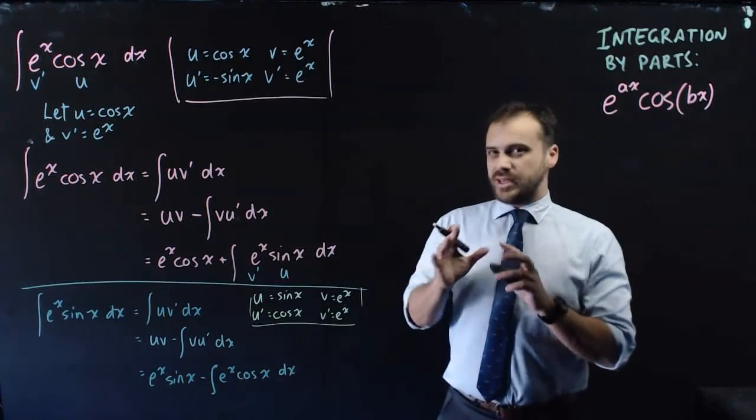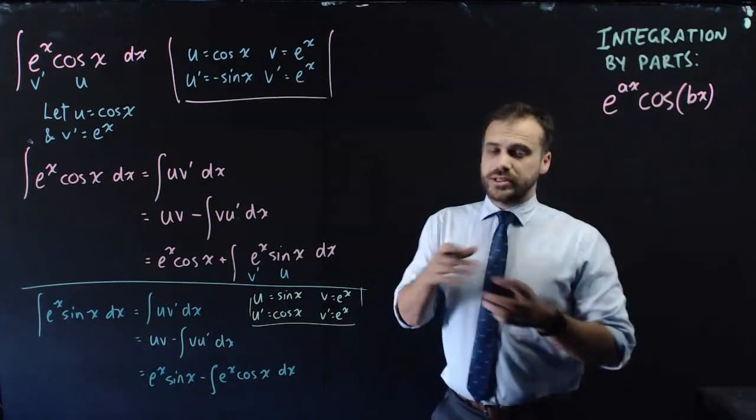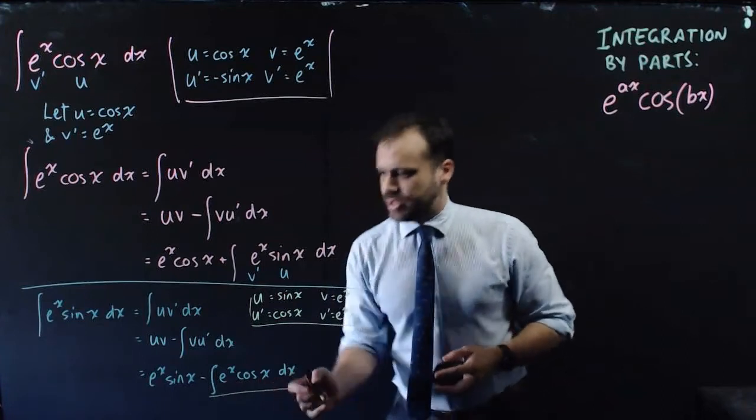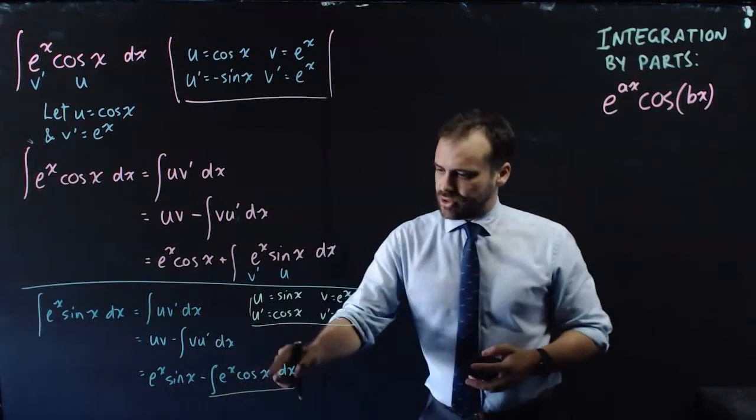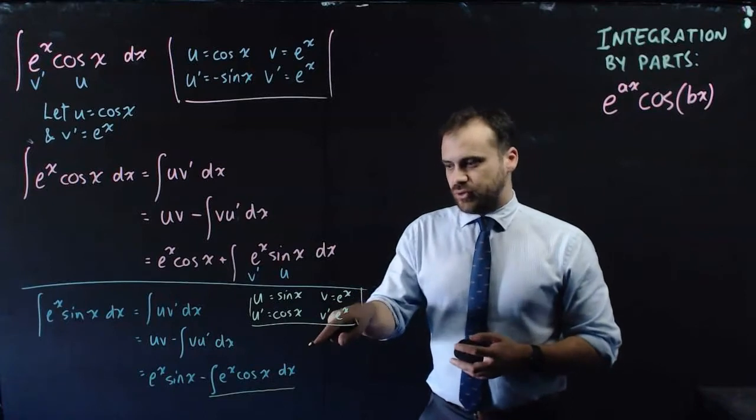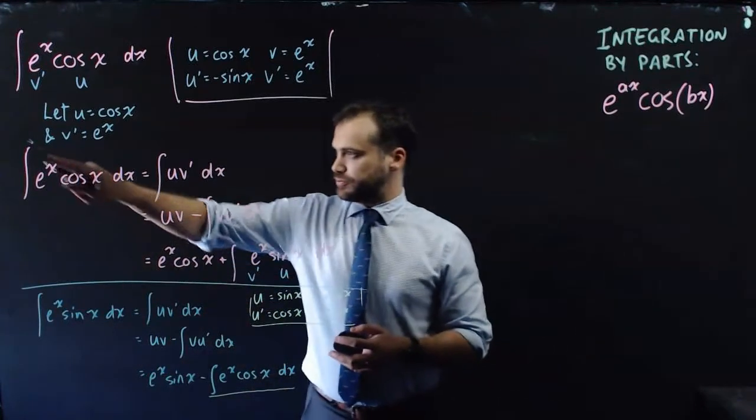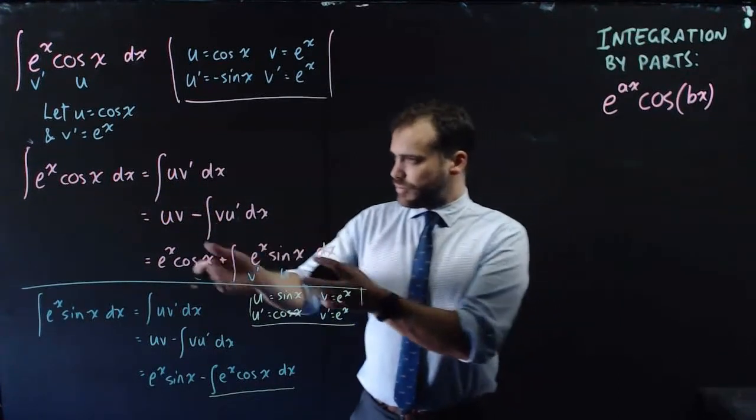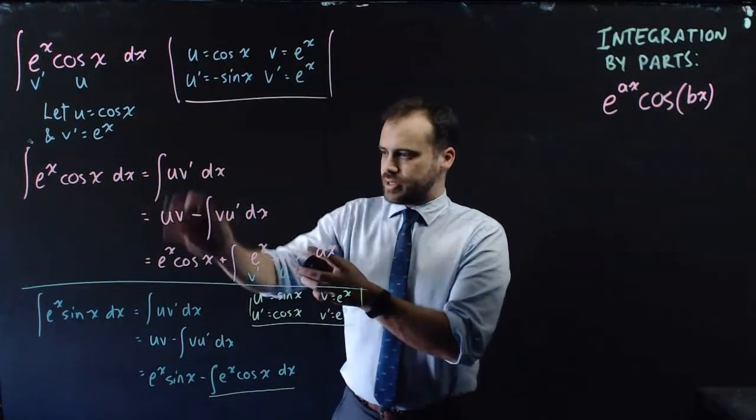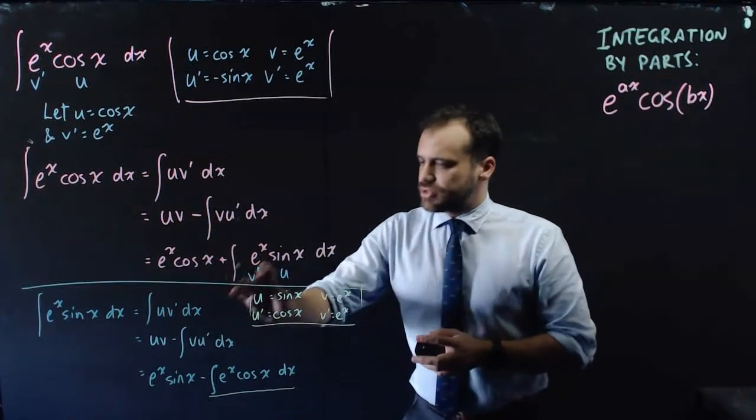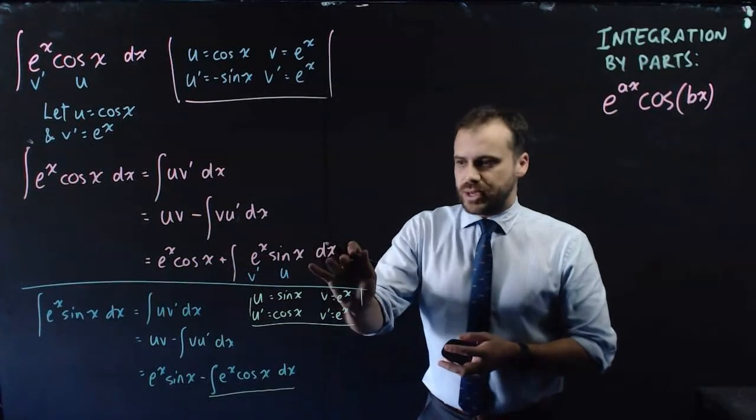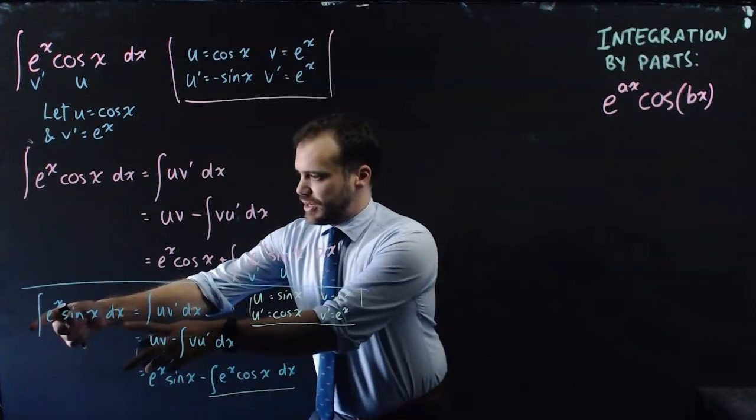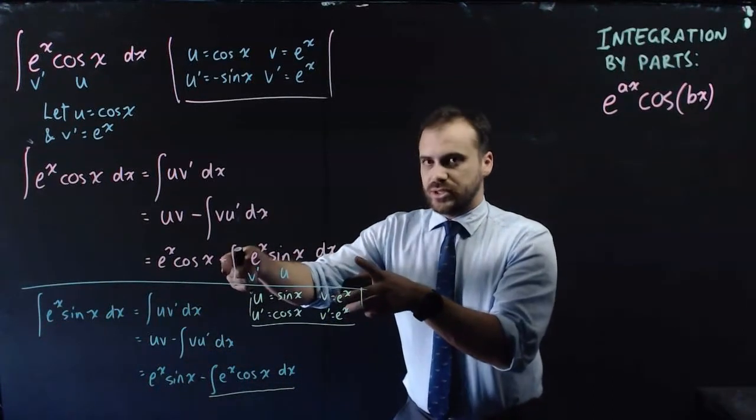And this is where people get either stuck or they say, oh, I see it. It's fantastic. Because look at this section here, integral e to the x cos x with respect to x. We've seen that before. We know that the integral of e to the x cos x was the thing that we were originally trying to find. And we know that the integral of e to the x cos x with respect to x is e to the x cos x plus the integral of e to the x sine x with respect to x. Which means that we can take what we just figured out and put that into this equation.